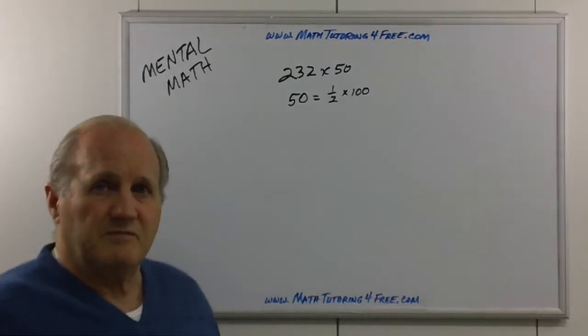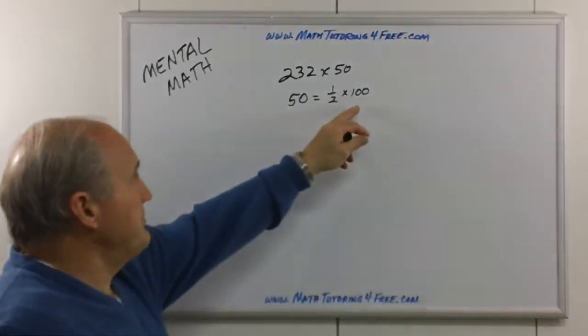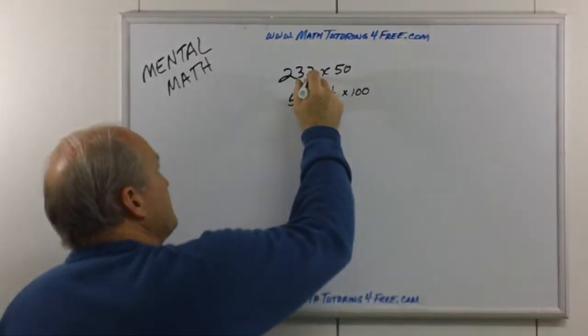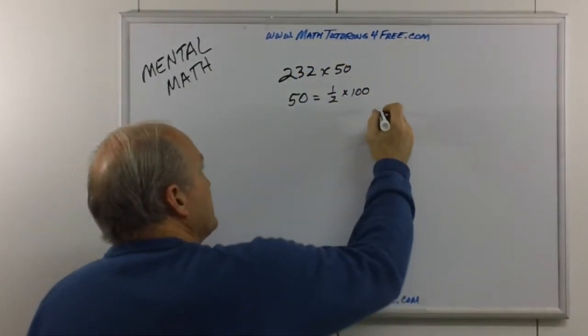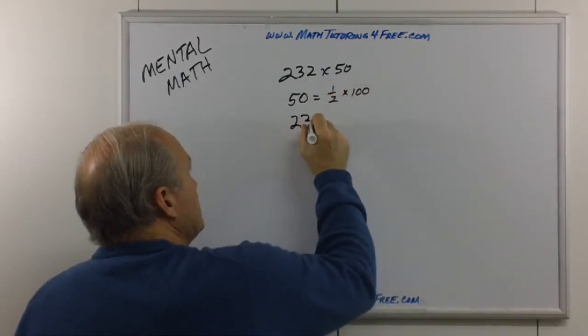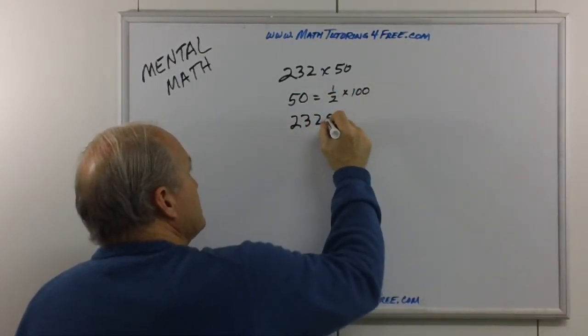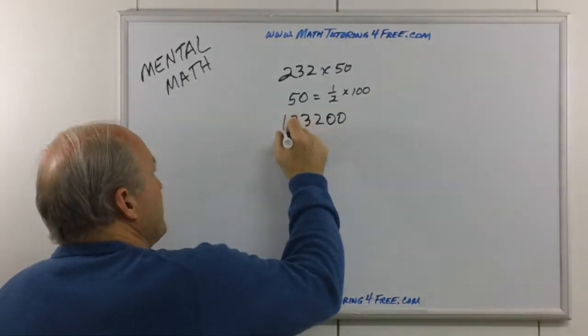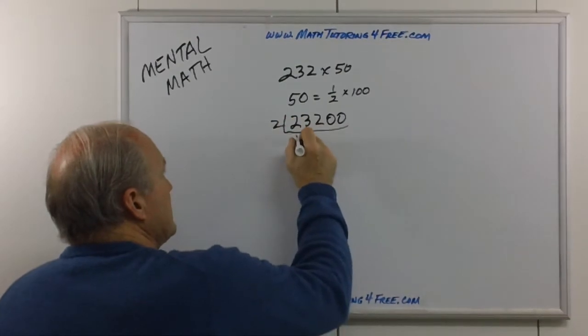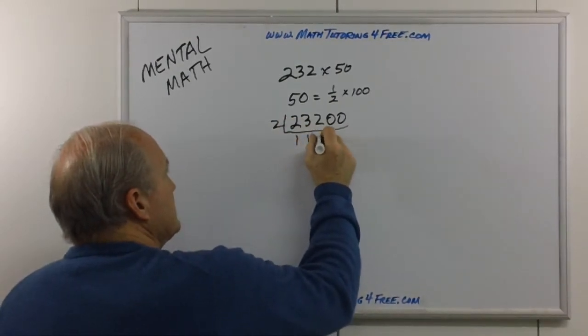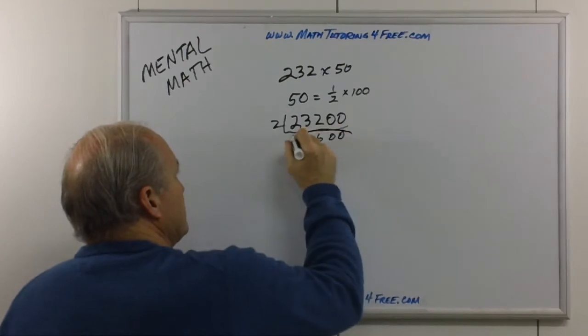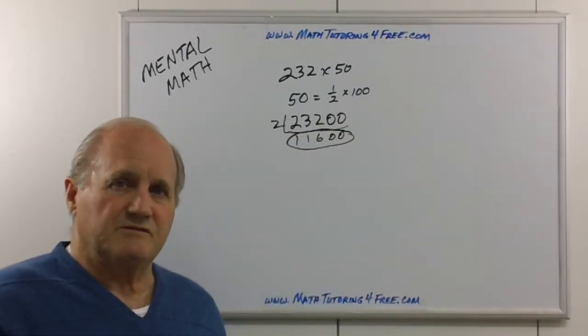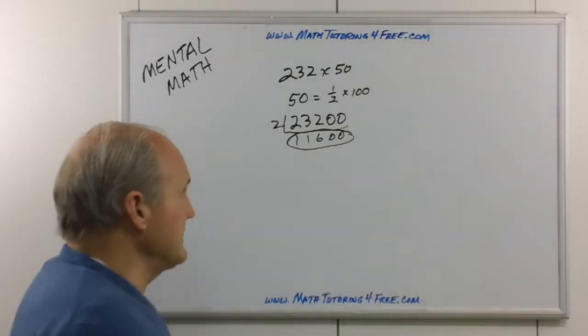So the simple thing when you're multiplying by 50 is just multiply first by 100, and then take half of it. So in multiplying by 100, we know we just move the decimal point over two places, so 232 times 100 is just adding two zeros to it. And then easily we can divide that by 2, and we get 11,600, and that's our answer. Again, simple, easy, and you'll do it faster in your head than you will on a calculator.